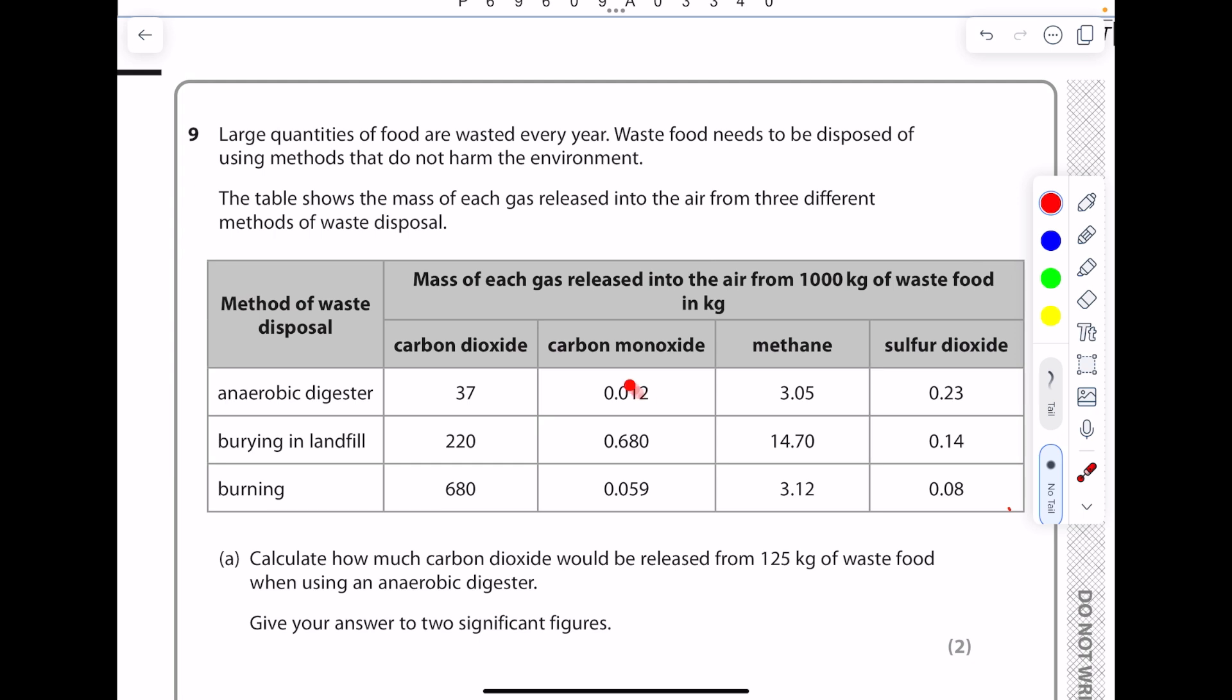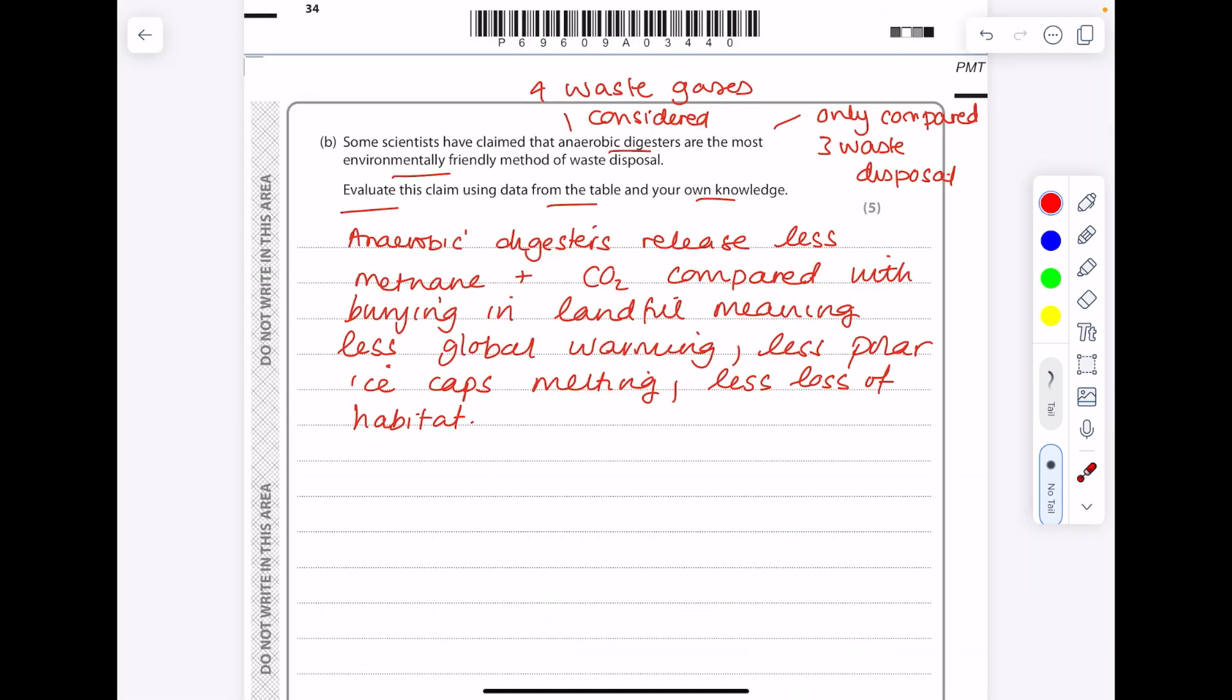Looking back here we can see that if you use the anaerobic digester we have less carbon monoxide being released compared with burying in landfill, which is a good thing because carbon monoxide remember is toxic. These digesters also release less carbon monoxide which is toxic.